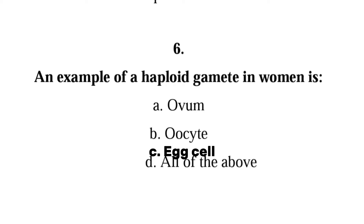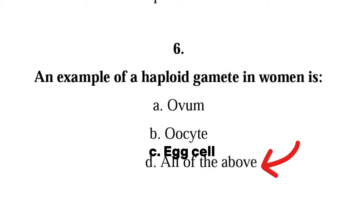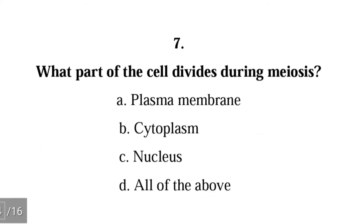Question 6: An example of a haploid gamete in women is — A. ovum, B. oocyte, C. egg cell, D. all of the above. The correct answer is D, all of the above. Ovum, oocyte, and egg cell all mean the same thing.